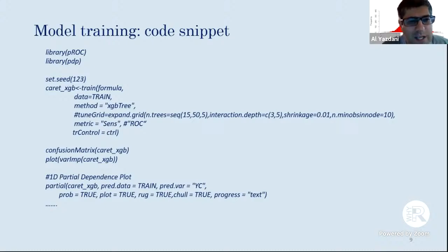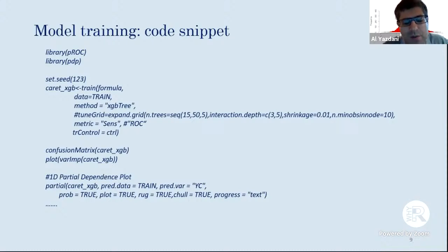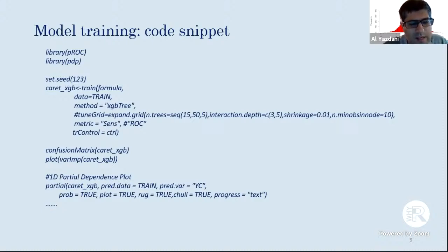The model training code using caret is fairly straightforward — this shows the XGBoost example with hyperparameters. I commented out the tune grid so I let the model find its own hyperparameter sets. For explaining results I use confusion matrices, variable importance plots, and partial dependency plots, with several additional packages available in the code on GitHub.